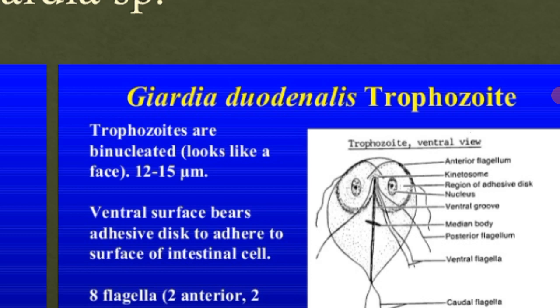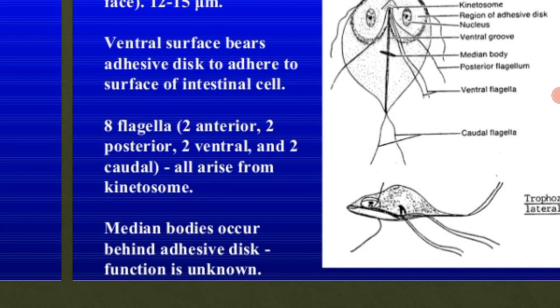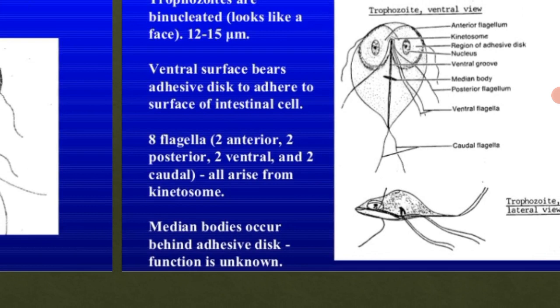The adhesive disc region is visible on the surface — it is responsible for adhesion to the intestinal cells. You can also see two nuclei and a ventral groove. There is a median body present in the middle of the structure, and posterior, ventral, and caudal flagella. Therefore, a total of eight flagella are present, making it the most distinct flagellated protozoan. The median body is located behind the adhesive disc, and its function is still unknown.